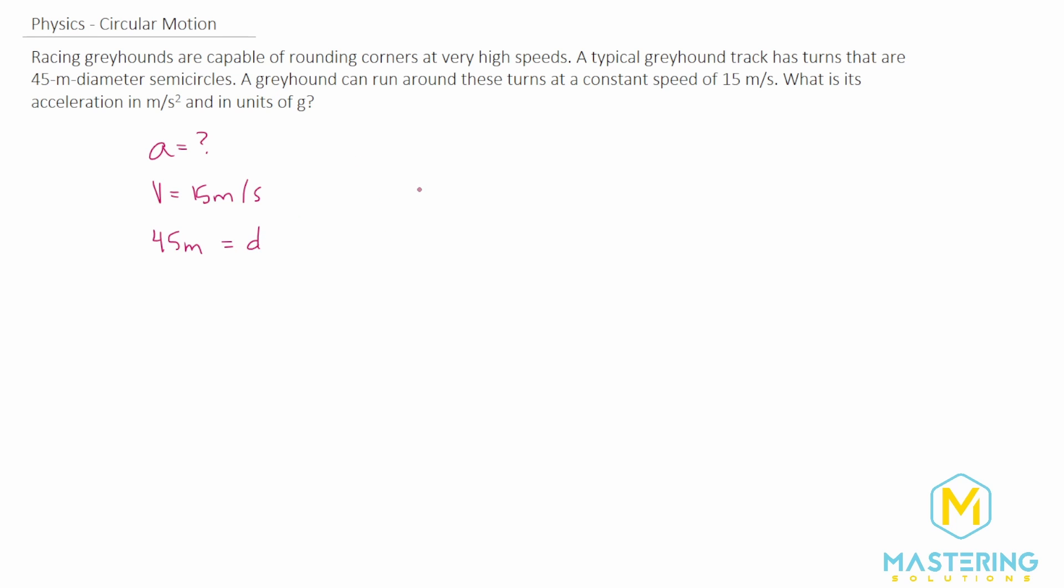What we need to do is write down the formula for acceleration for circular motion. For circular motion, the formula is v squared over r, but we don't have the radius, we have the diameter, and the diameter is equal to 2 times the radius.